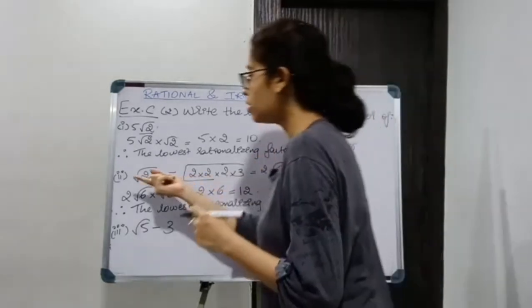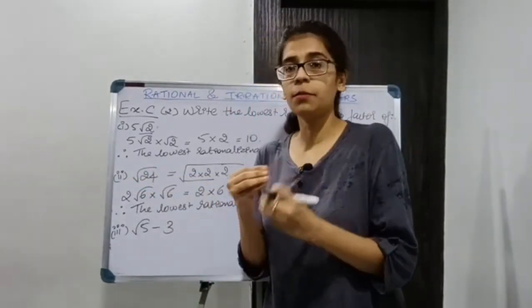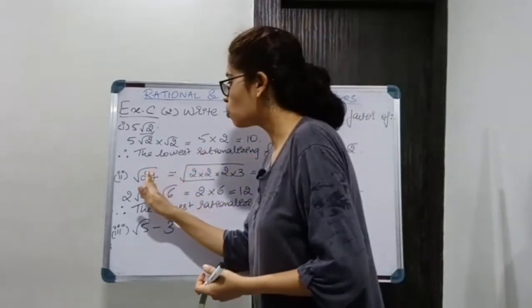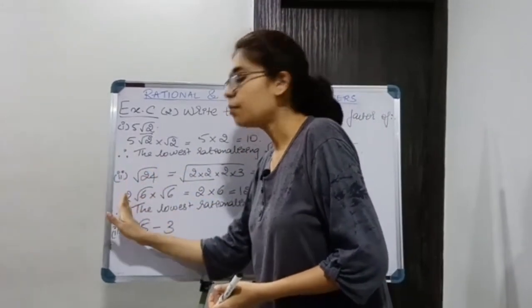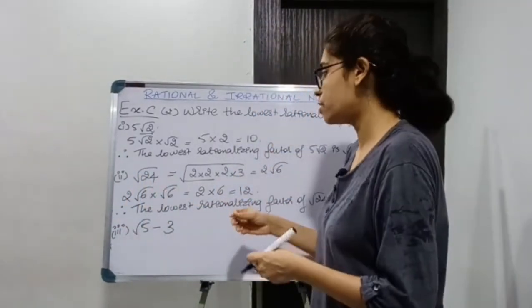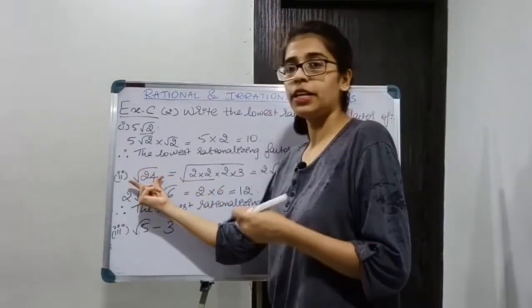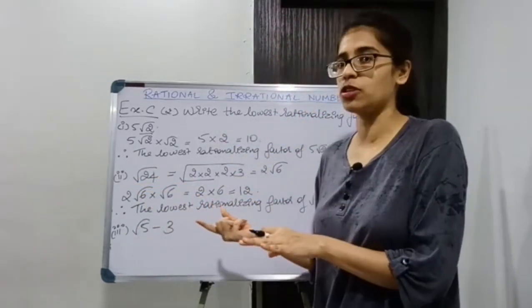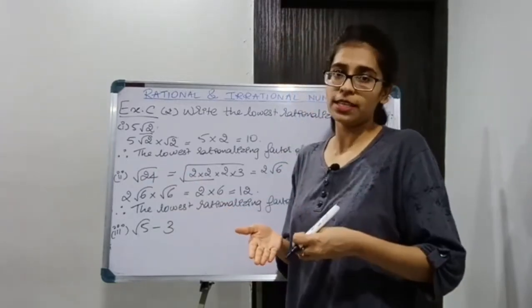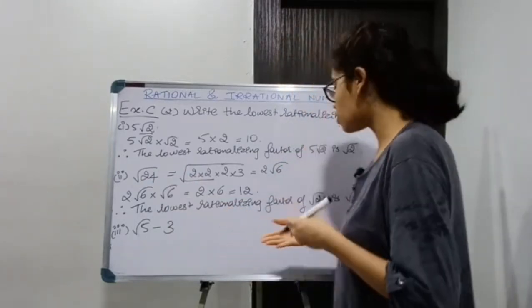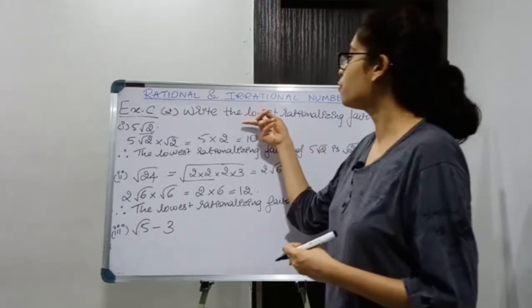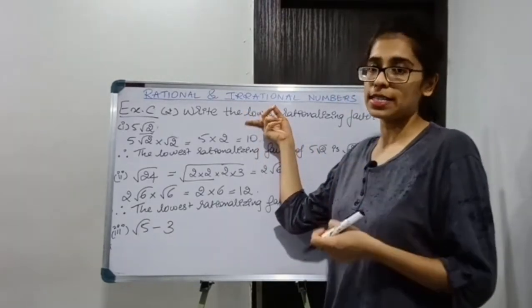Please check the root — if you have a bigger number and you can bring some number outside the root, please do that step first. Because multiplying √24 by √24 gives a rational number, but √24 is not the lowest rationalizing factor. The lowest rationalizing factor is √6, and you are asked for the lowest rationalizing factor.